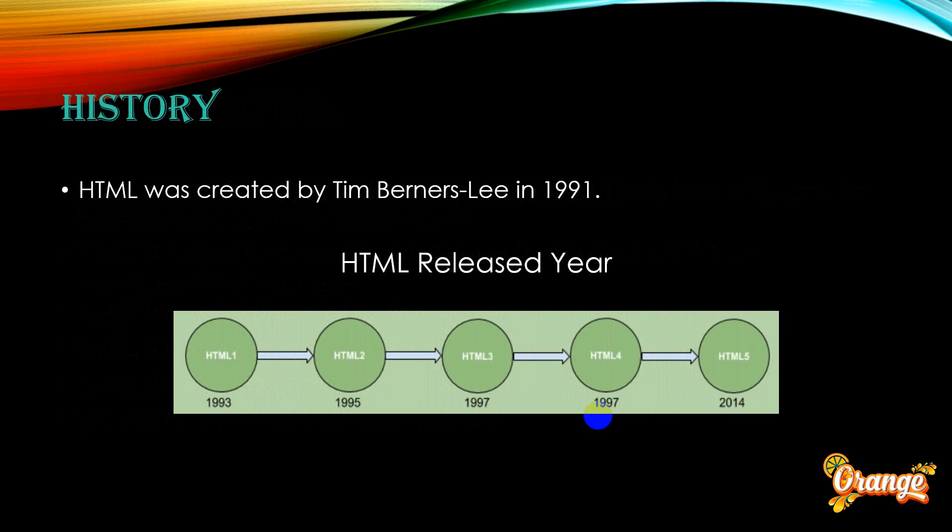HTML was created by Tim Berners-Lee in 1991. The release history: HTML 1 in 1993, HTML 2 in 1995, HTML 3 in 1997, HTML 4 in 1997, and HTML 5 in 2014.